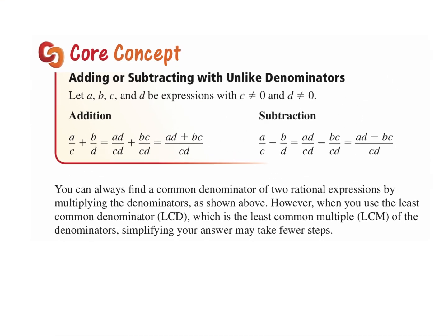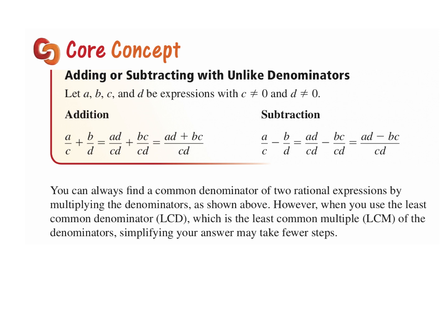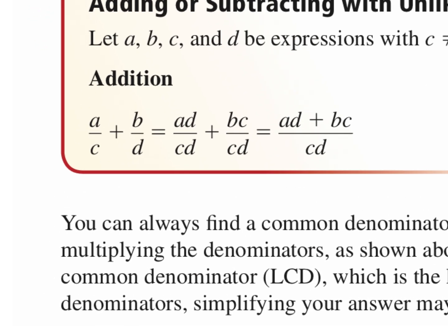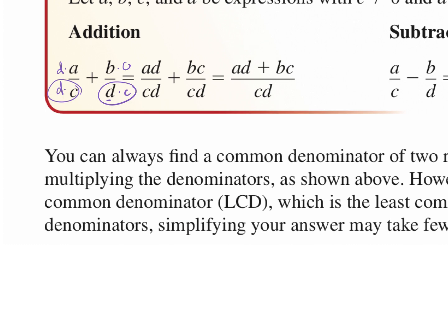Now we're going to do examples where we're adding and subtracting with unlike denominators. If we have unlike denominators, we have to make them like. You can always find a common denominator by multiplying the denominators together. However, using the least common denominator — the least common multiple of the denominators — means simplifying may take fewer steps. So you multiply each fraction by what's missing from its denominator.